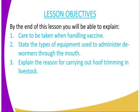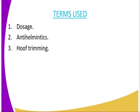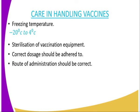We have some terms to understand. Dosage refers to the correct amount of a drug that you are supposed to administer in a single administration. Anthelmintic refers to the drugs normally used to control worms — in other words, dewormer drugs. Hoof trimming is the process whereby overgrown hooves are cut or trimmed short.